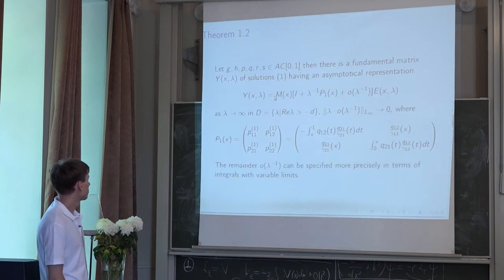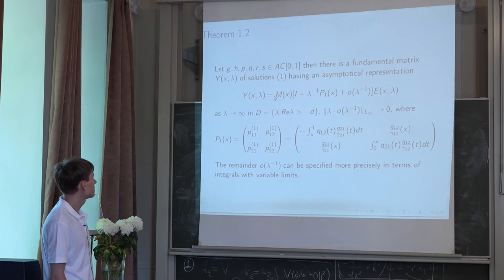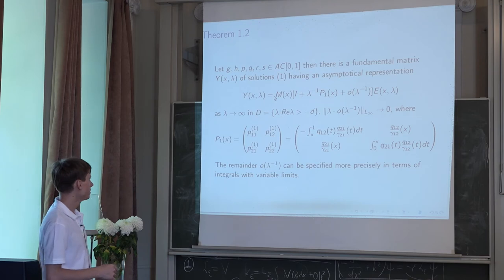Okay. Next point of the theorem, it is asymptotics in the case of absolutely continuous coefficients. In this case, we can obtain one more term of asymptotics. And this term, this coefficient, is matrix p_1(x).